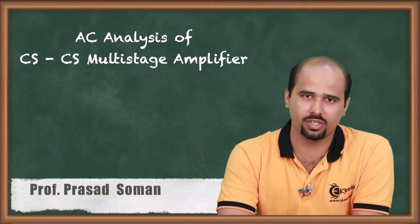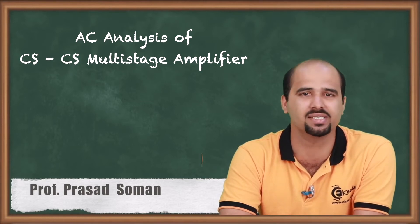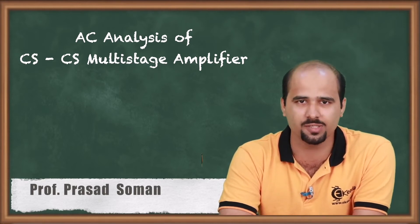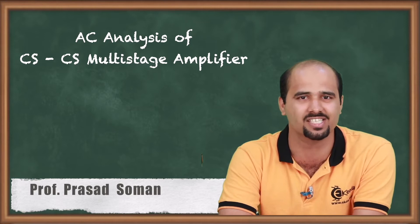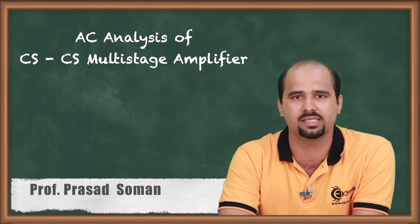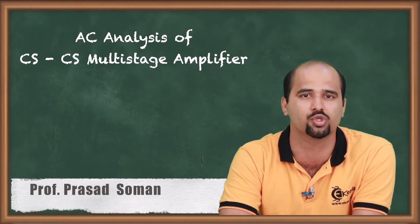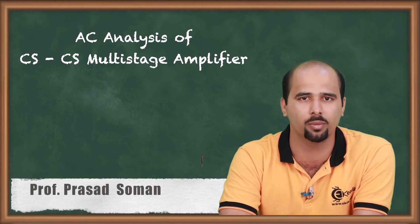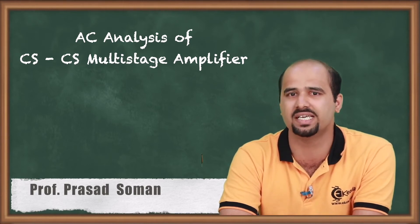Hello guys. In this particular video we will learn some AC analysis concepts for not single stage but multi-stage amplifier using field effect transistor, that is FET. We will start with a simple mode of field effect transistor that is CS mode, that is common source. So CS-CS means common source is one input stage and common source is another output stage, forming a two-stage amplifier formed by two FET transistors.